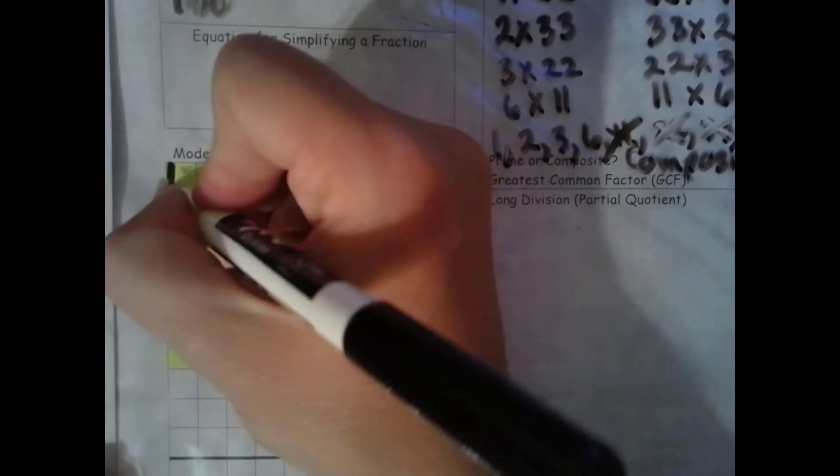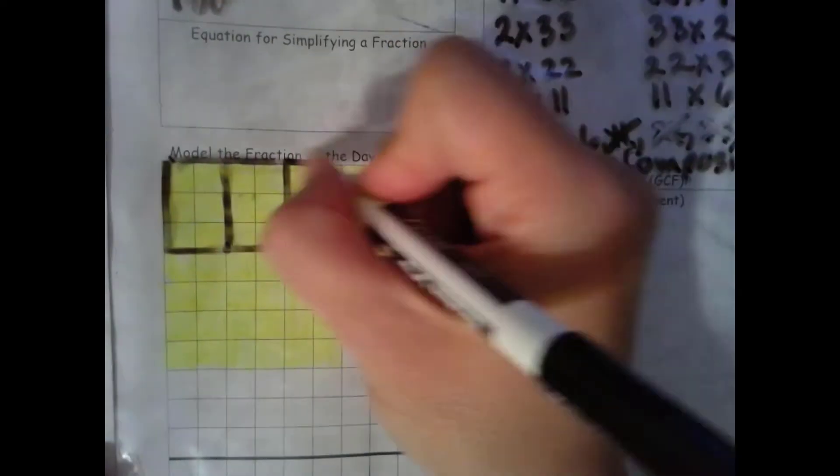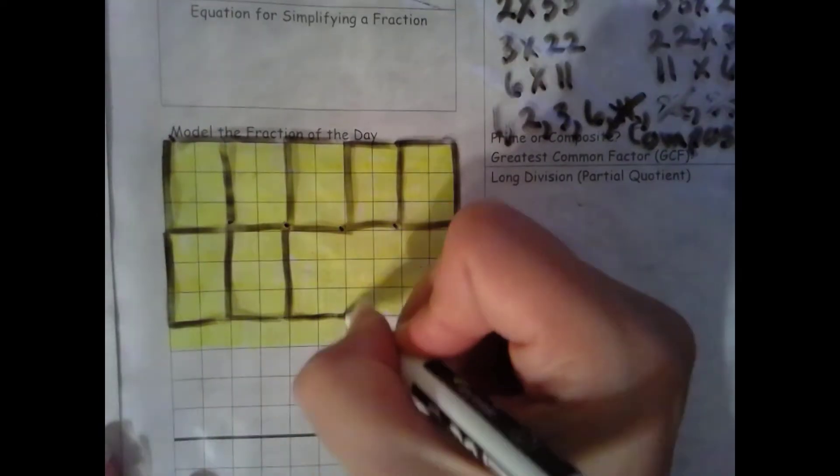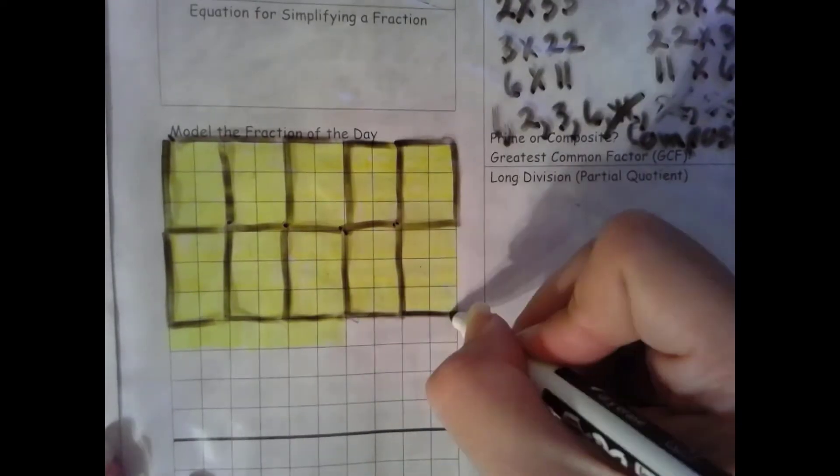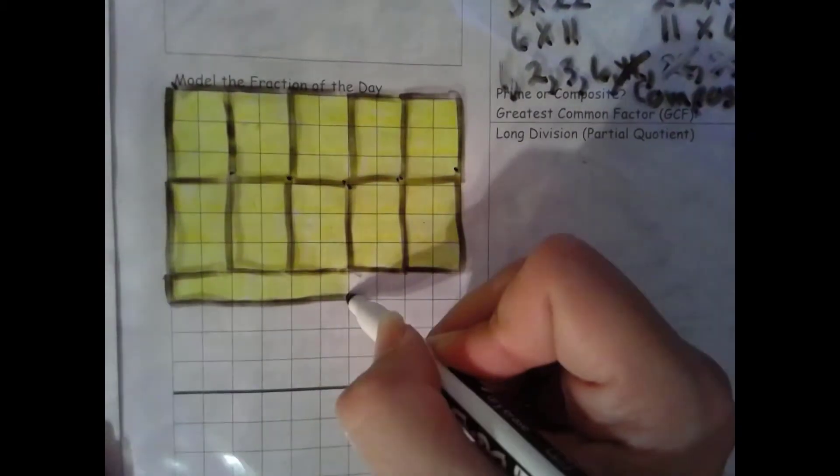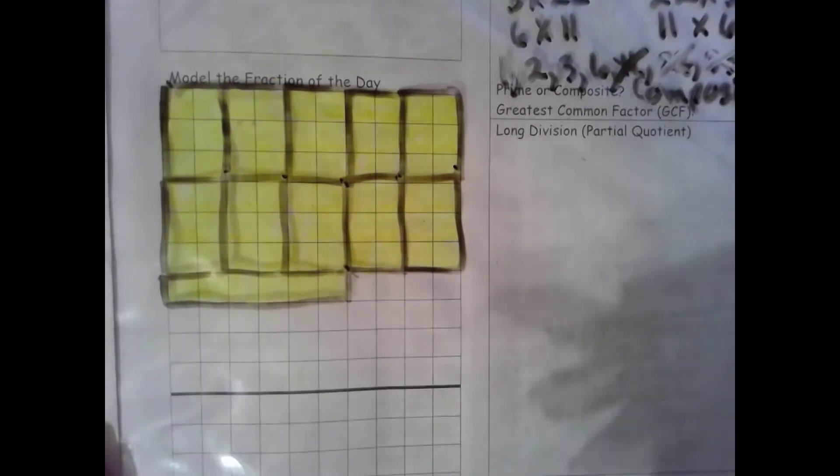So let's try groups of 6. I'm going to use 2 times 3 to help me make groups of 6. Your groups do not have to look like mine but you do have to have 6 in each group and you need to keep your shaded separated from your unshaded.